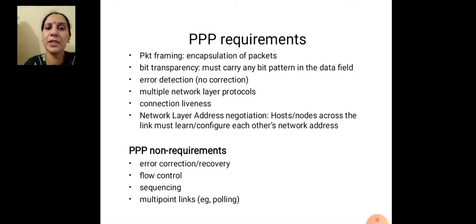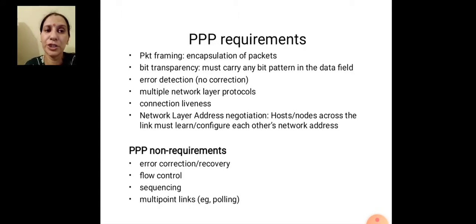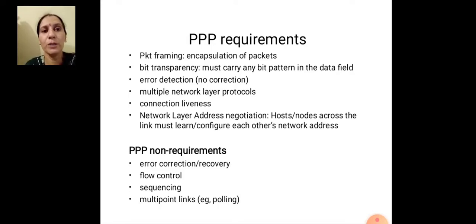When we do bit transparency, we add an extra bit for detecting an error. Next is support for multiple network layer protocols, and for connection liveliness — meaning we also use point-to-point protocol to establish a connection. Additionally, network layer address negotiation requires that hosts or nodes across the link must configure each other's network address using point-to-point protocol.